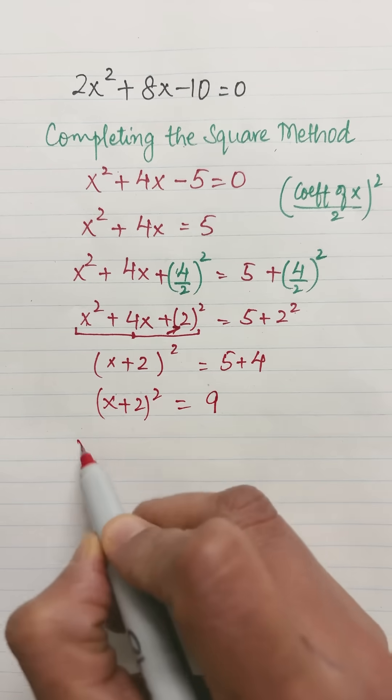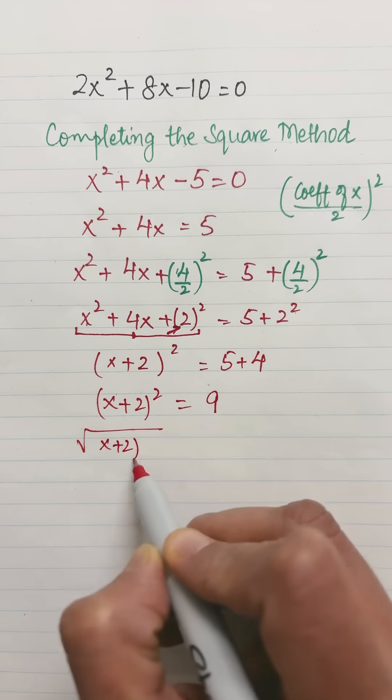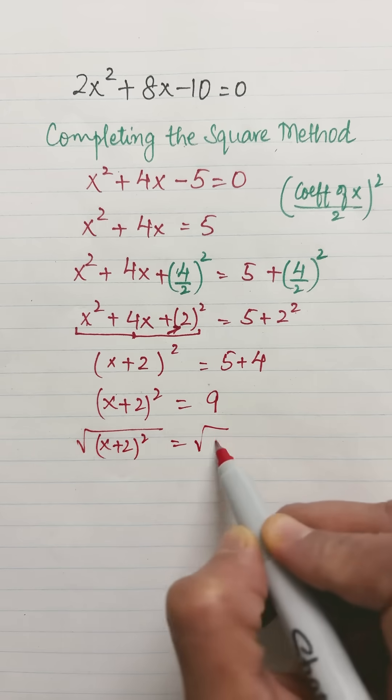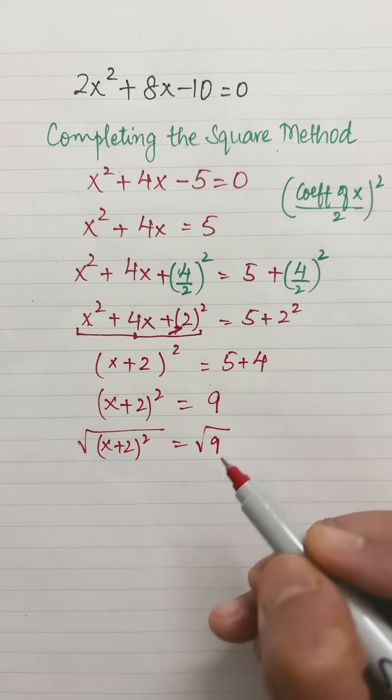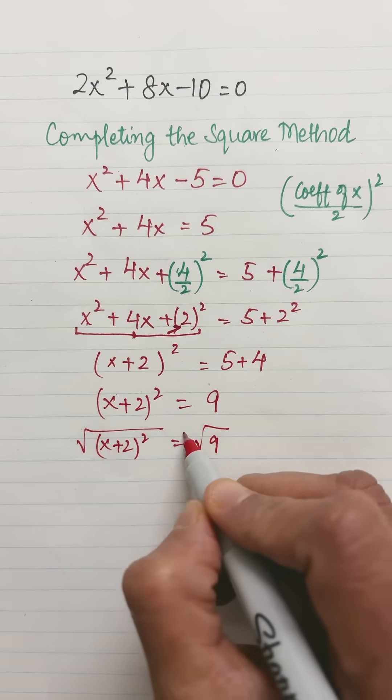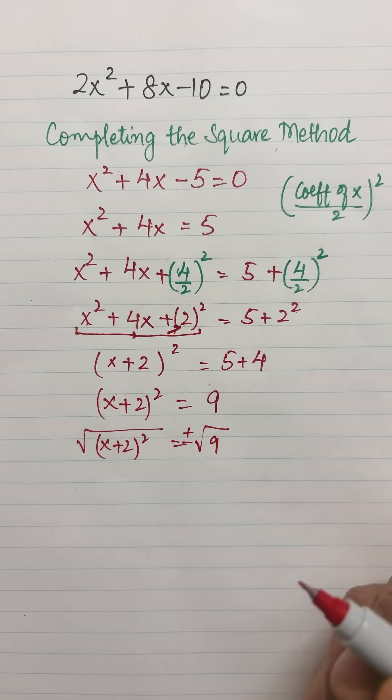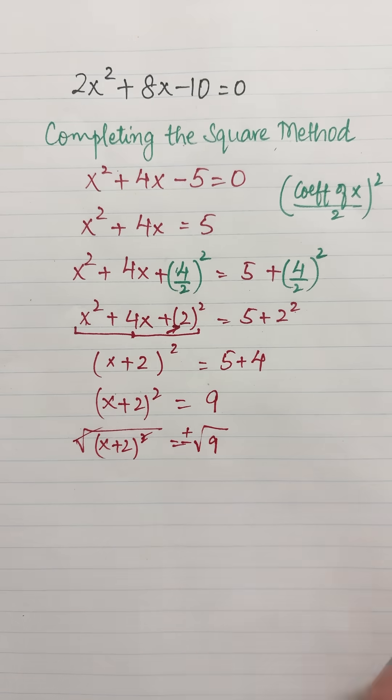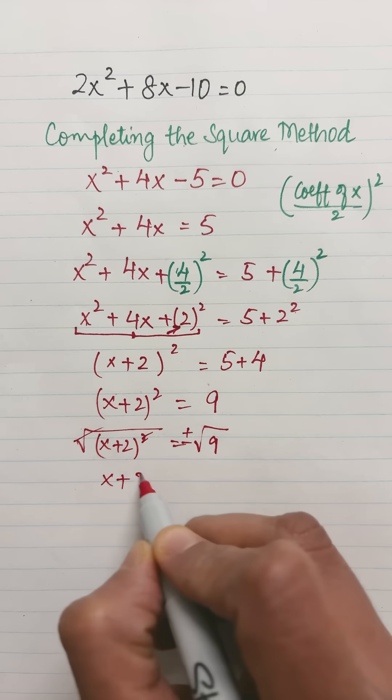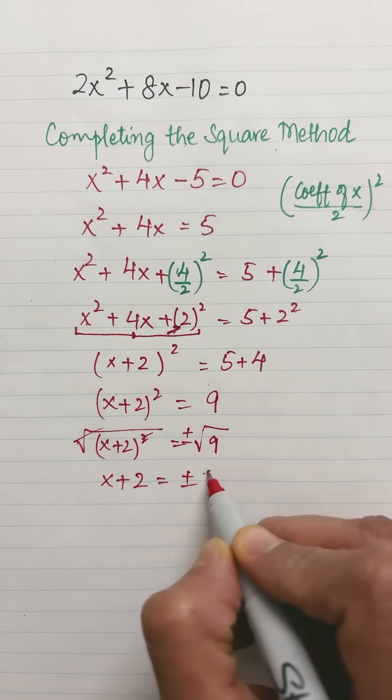To get rid of this square, let's take square root on both sides, equals square root of 9. Whenever we take the square root of any number, we always have two versions, plus and minus. So this gets cancelled. I get x + 2 as ±3.